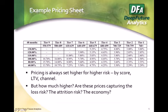Let's start with an example — just a small piece of a pricing sheet for auto lending. You can see different score bands or tiers, and on the rows are different LTV levels. This piece of the table is for 48-month auto loans. This is essentially a meet-the-market pricing sheet with a little bit of judgment on top, which is typical. Pricing always follows risk — as you go to the lower scores and higher LTV, the pricing goes up. Some cells are prohibited, as the assumption was too much risk.